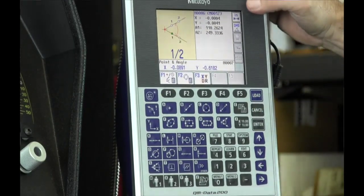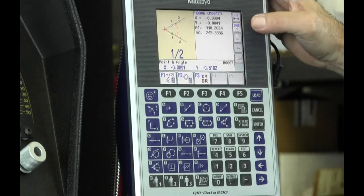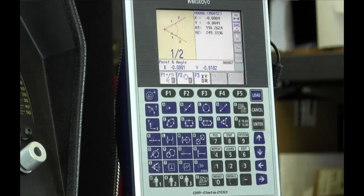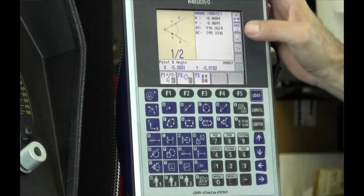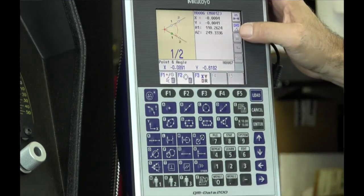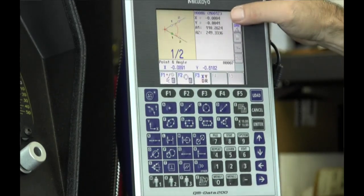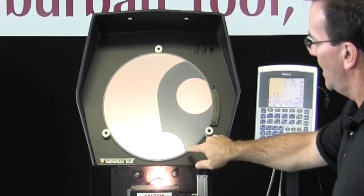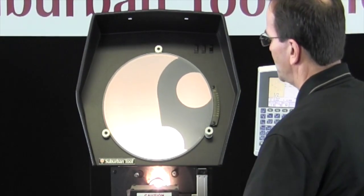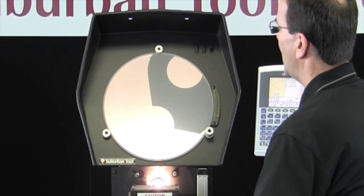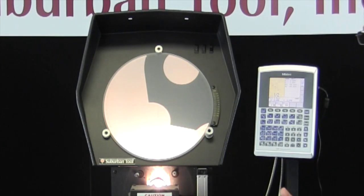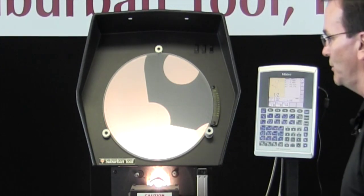We've picked those four points. It gives us both the inside angle and the outside angle, 110 degrees and 249 degrees, and it gives us the theoretical intersection of those two lines, which we obviously can't see, but might be important depending on the type of measurements you're doing.